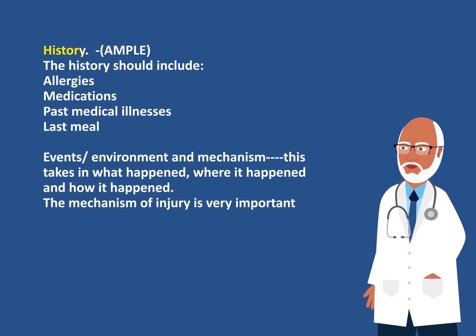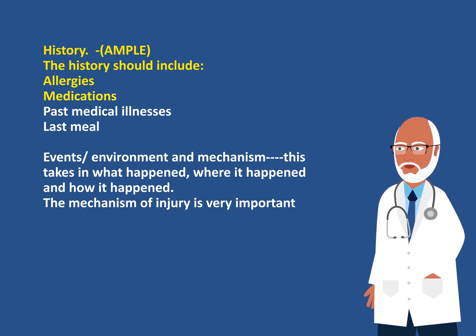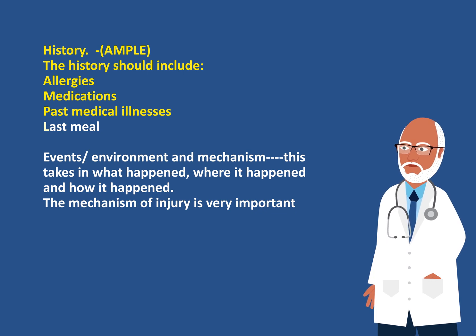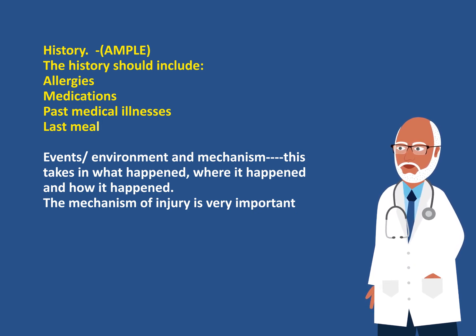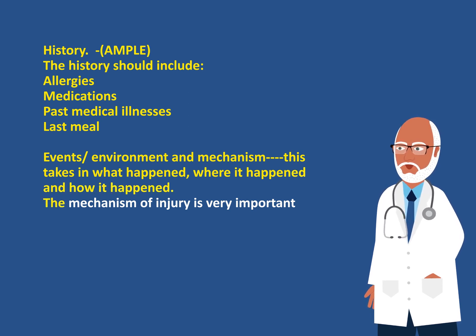The history can be captured using the acronym AMPLE: Allergies — it is important to know if the person has any allergies; Medications — know if the person is on any medications; Past Medical Illnesses — important to know if attainable; Last Meal — particularly important if the person has to go to the OR and aspiration is a concern; and Events, Environment, and Mechanism — what happened, where it happened, and how it happened. The mechanism of injury is especially important.